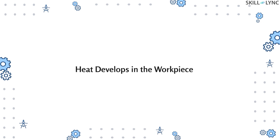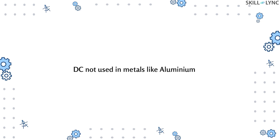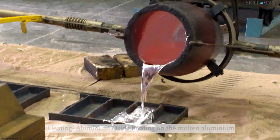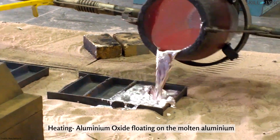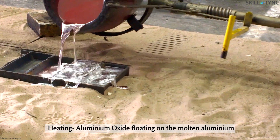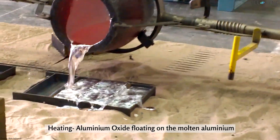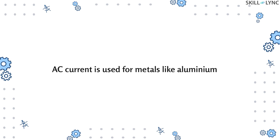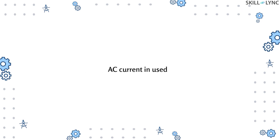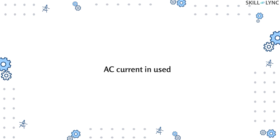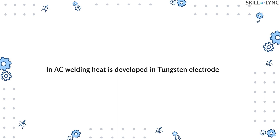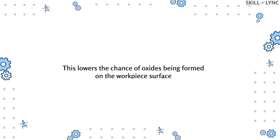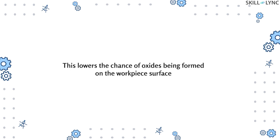A DC power source is used for TIG welding in most cases, as the majority of the heat is on the workpiece instead of the tungsten electrode. However, DC is not used when welding metals like aluminium, because aluminium has a higher tendency to form oxides when molten, which reduces the weld quality. To avoid this, AC current is used for metals like aluminium.